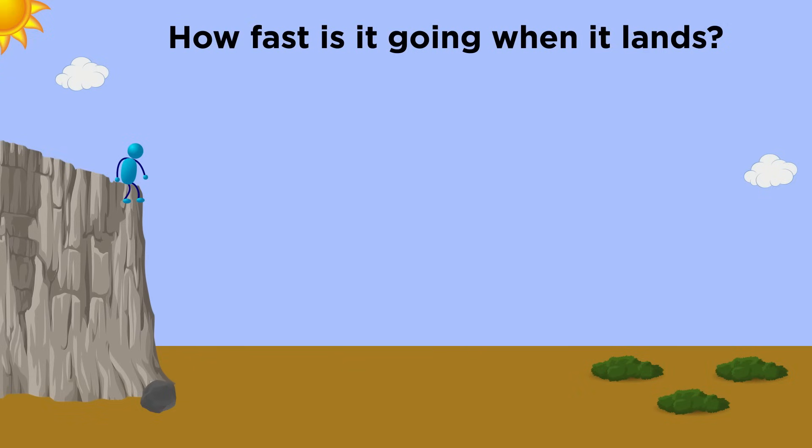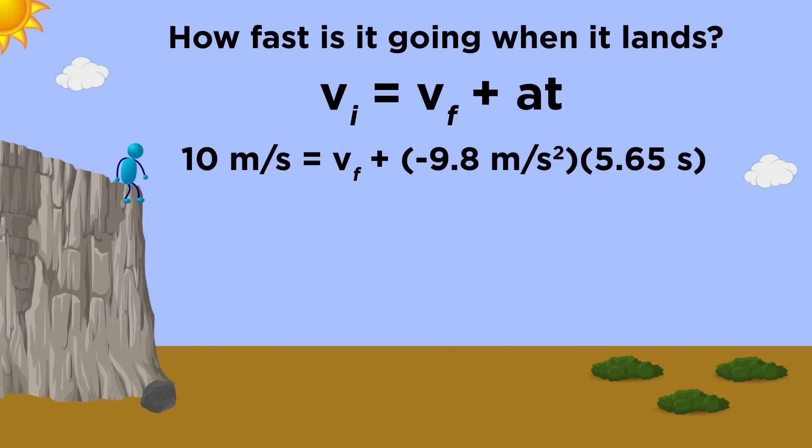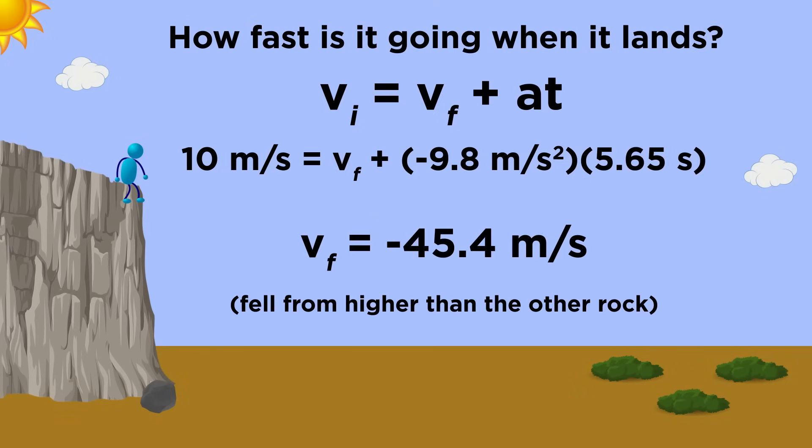How fast will this one be traveling at the point of impact? Let's use this equation again. This time we have to use 10 meters per second as the initial velocity, and then we plug in our acceleration and the time we just calculated. This will give us negative 45.4 meters per second at the time of impact, a little more than the other rock because it fell from a slightly higher position, the peak of its trajectory.